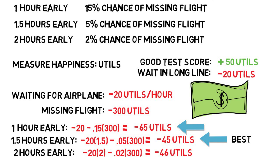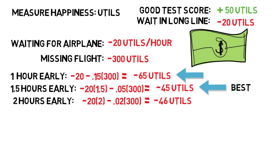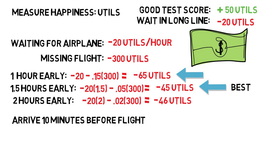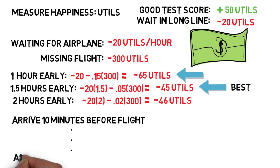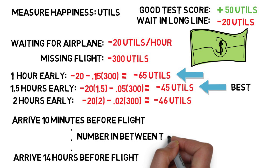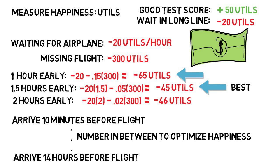Now you probably have some objections to this because of how things were valued, and you're totally right — this will be different for everyone in every situation. But would you agree it's not ideal if you arrive 10 minutes before your flight and miss it 90% of the time? And on the other side, you wouldn't want to arrive 14 hours before your flight just to be guaranteed to make it. If you can agree with this, then there's some number in between that will optimize your happiness based on however you weigh the worth of waiting around versus missing a flight.